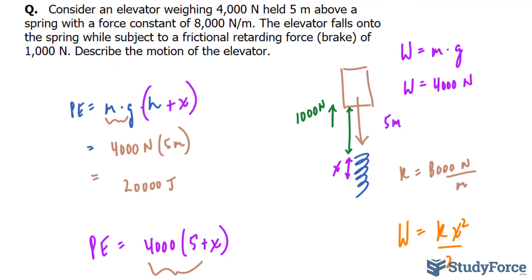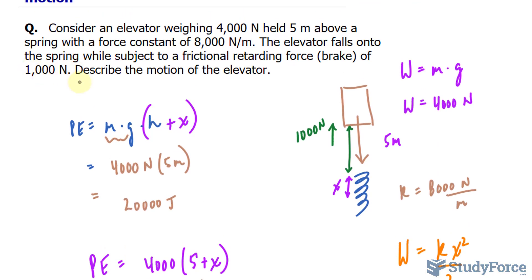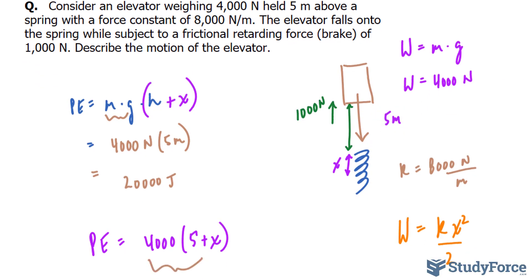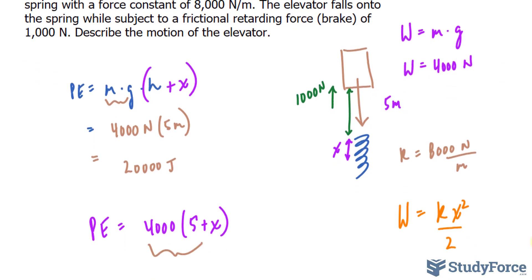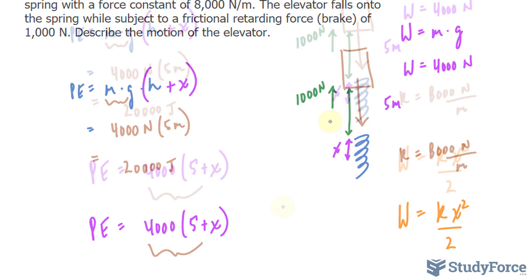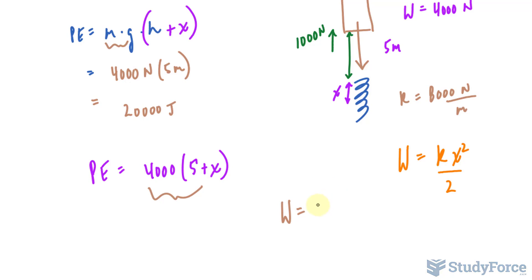In the question they tell us that the friction is 1,000 newtons, and that's happening over 5 meters. And not just 5 meters—as discussed already, it's 5 meters plus the amount that it is being compressed. So to write that down as an expression involving work, I'll say that the work is equal to the force due to friction being 1,000,